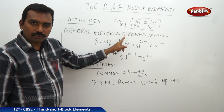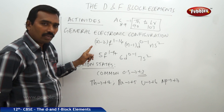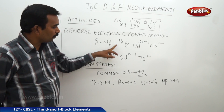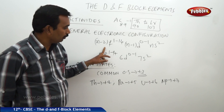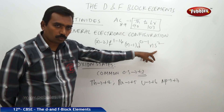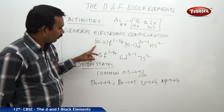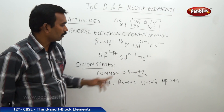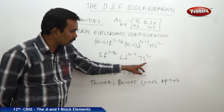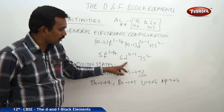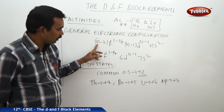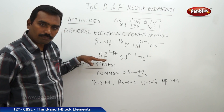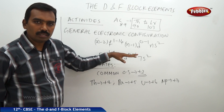Now, looking at the general electronic configuration of actinides: like lanthanides, they have the configuration (n-2)f¹⁻¹⁴, (n-1)d⁰⁻¹, ns². For actinides, since the filling occurs in the 5f subshell, n equals 7, giving us 5f¹⁻¹⁴, 6d⁰⁻¹, 7s².